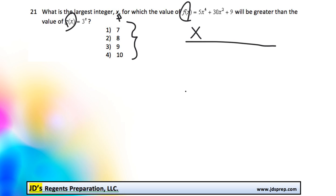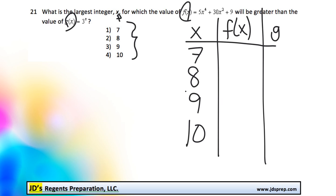We'll have our x values of 7, 8, 9, and 10. We'll have our f(x) and then our g(x).